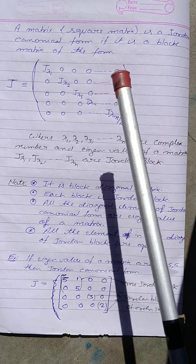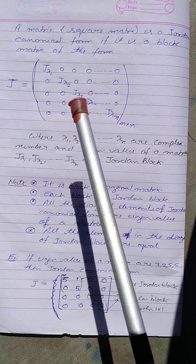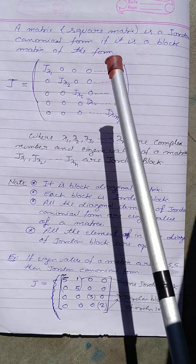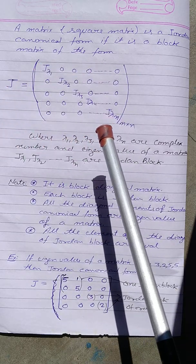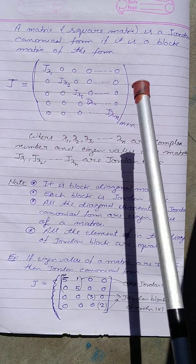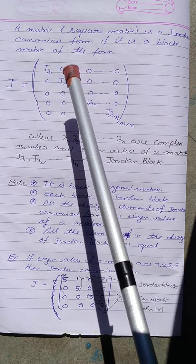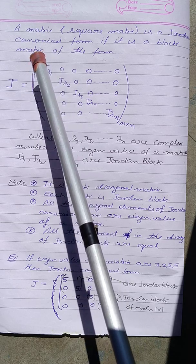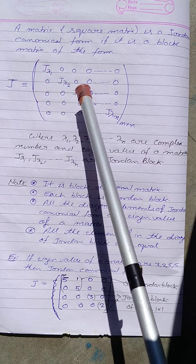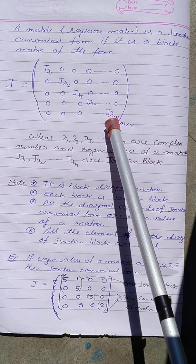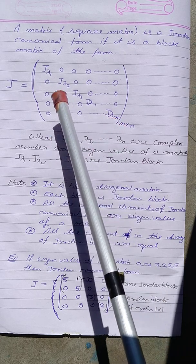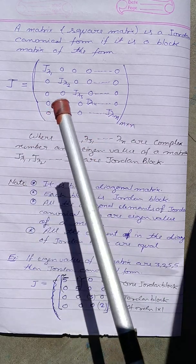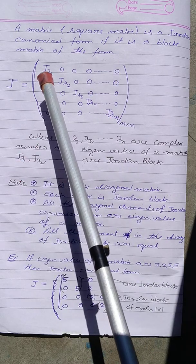A square matrix is a Jordan canonical form if it is a block matrix of the form where the blocks along the diagonal are Jordan blocks: J(λ₁), J(λ₂), up to J(λₙ). Here λ₁, λ₂, …, λₙ are complex numbers or eigenvalues of the given matrix, and each J(λᵢ) is a corresponding Jordan block.